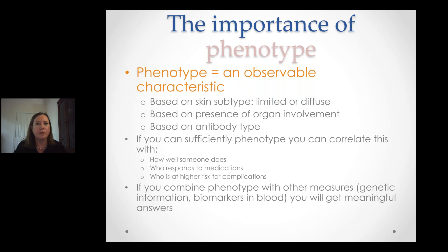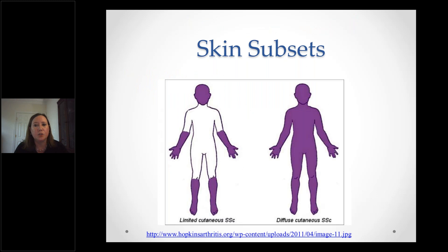One of the ways we phenotype patients is by the degree of skin involvement. We subdivide patients into two major skin subsets: limited and diffuse. Patients with limited scleroderma have a more restricted distribution of skin involvement — by definition below the elbows and knees, but most commonly just the fingers. Patients with diffuse scleroderma have widespread skin involvement.